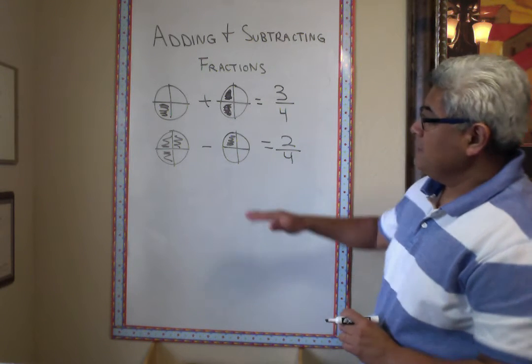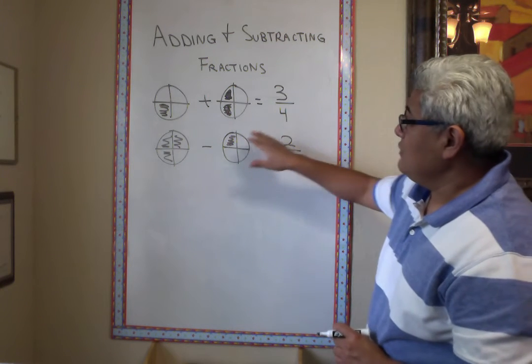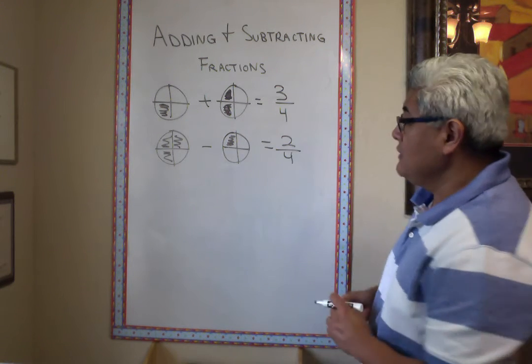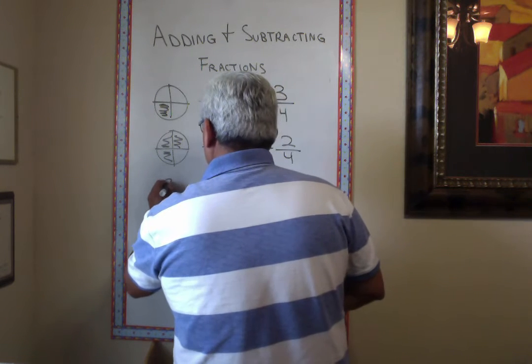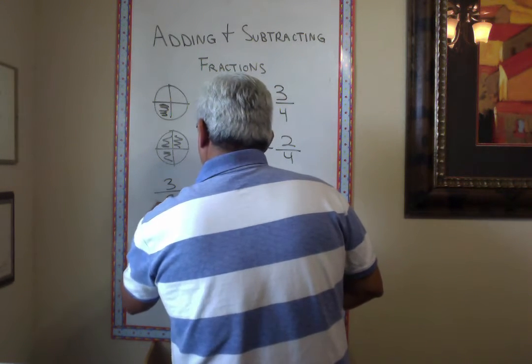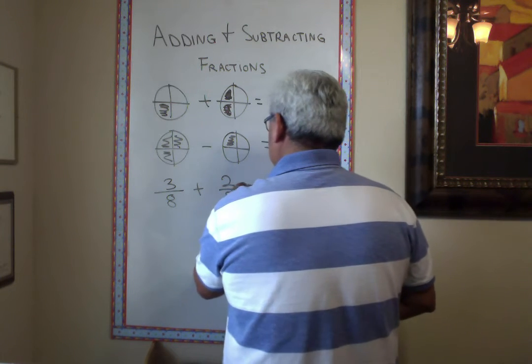Now, remember, when the denominators are the same, all you do is keep the denominator the same, and you just work on the numerator. So, here's another example of using numbers. Let's say I have three-eighths plus two-eighths.